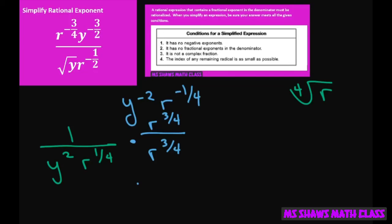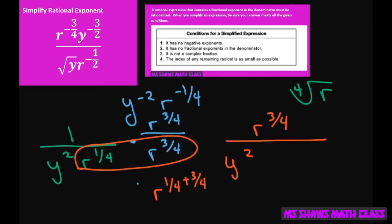So the numerator is just going to be r to the three-fourths. You still have your y squared, and then when you multiply these, this is going to be r to the one-fourth plus three-fourths, and that gives you r to the four-fourths, which just gives you r.